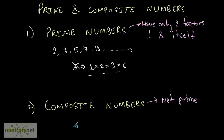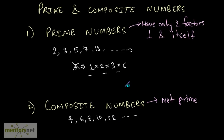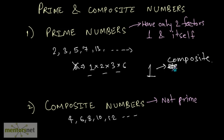The numbers which are not prime are composite numbers. So we could have 4, 6, 8, 10, 12 and so on as composite numbers. Now, the number 1 is neither a prime number nor a composite number — 1 is not composite and not prime.